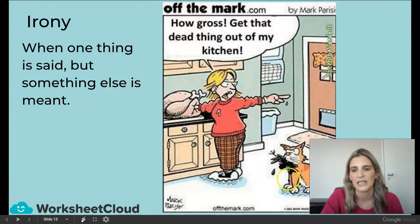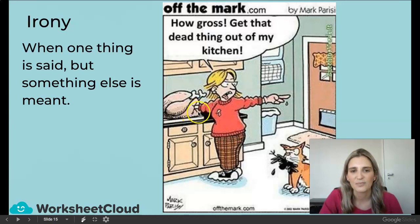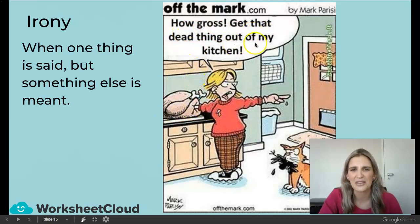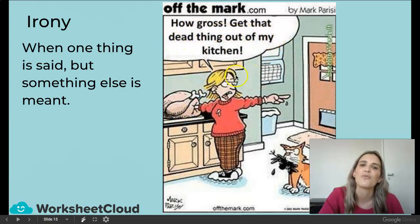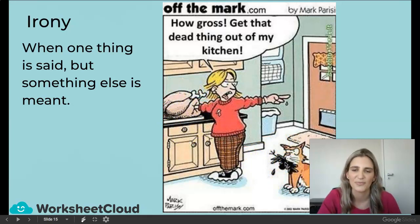The cat has brought in a dead bird — it's in his mouth — and we expect that. This lady has her hand inside what looks like a turkey, getting the stuffing out from the inside, so she also has a dead bird. Look what she says to the cat: 'How gross. Get that dead thing out of my kitchen.' This is ironic because she has a dead bird in her kitchen, and she's telling the poor cat — who also just brought a dead bird home — to get out.